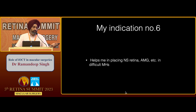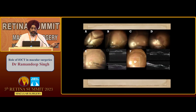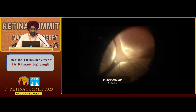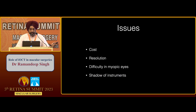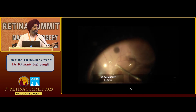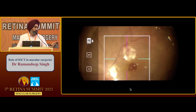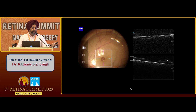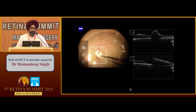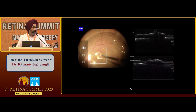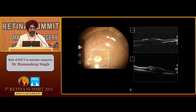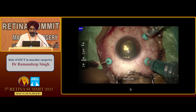We have been using this tool for a long time for macular holes and optic pits, confirming that whatever we are placing in these holes is going to the right location. Indication number six is my initial experience with neurosensory retinal grafts taken from the periphery for RD with a large macular hole. We used MIOCT to make sure the graft was in the right place, and we published this technique with Dr. Ratra.